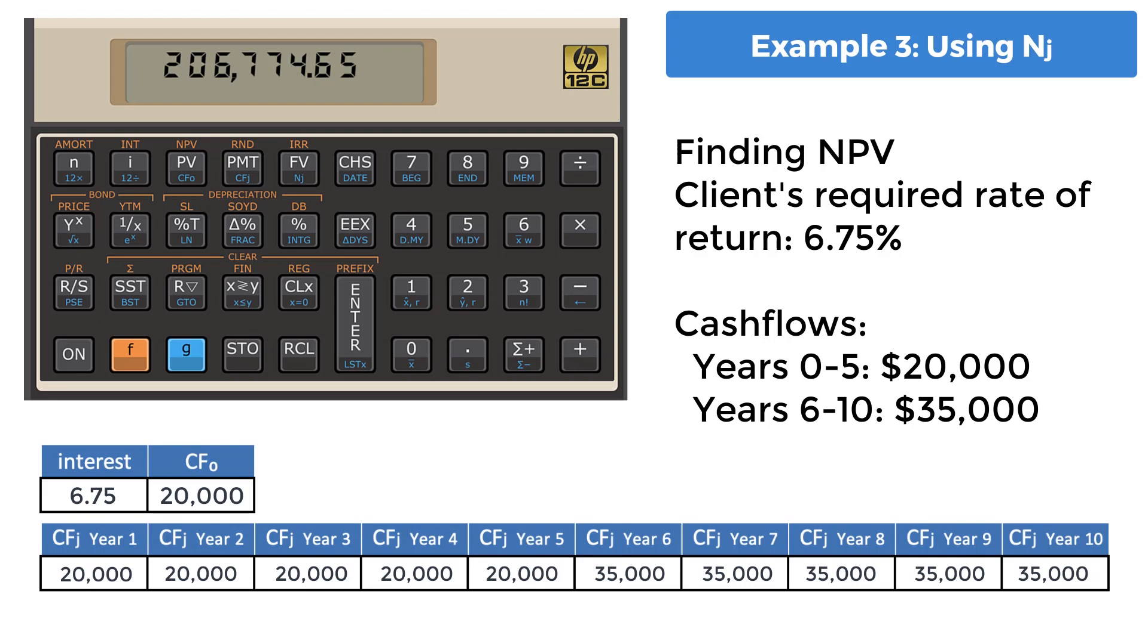After a few moments, it shows the value $206,774.65. How you'd describe this to the client is today, you'd have to give up $206,774.65 to receive 6 $20,000 yearly payments starting today, followed by 5 $35,000 yearly payments.